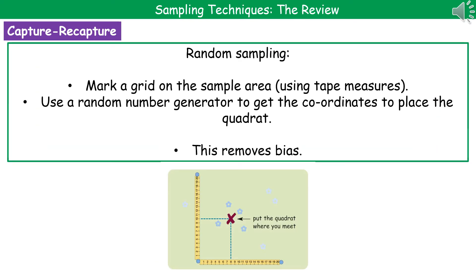When we're thinking about sampling, there are two types: random and non-random. Random sampling is where we'd mark a grid on the sample area using tape measures and then use a random number generator to give us the coordinates to place our quadrat. The whole idea behind random sampling is that it removes any form of bias.